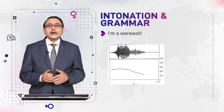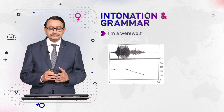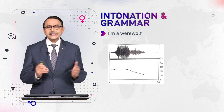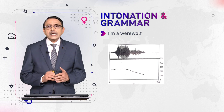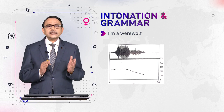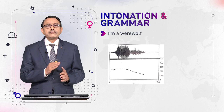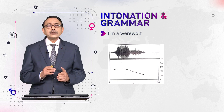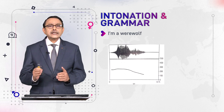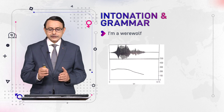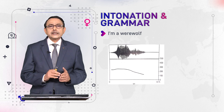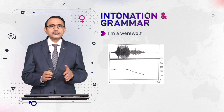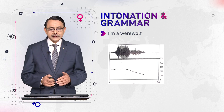'I am a werewolf' is simply a statement, and in statements we have a falling tone. On the right-hand side you can see the curve going downward, showing the falling tone.